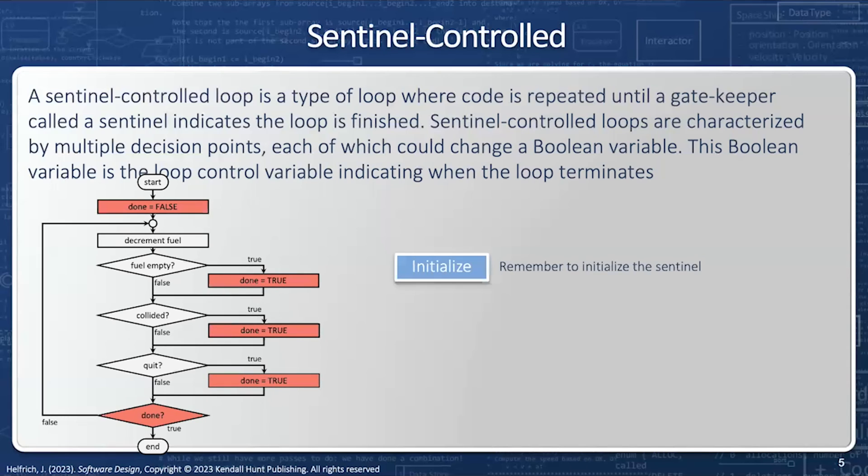Every time we have a sentinel control loop, we have these several parts. The initialization to set the sentinel. We have the control, which is the if statement or the while loop, to determine whether we're going to continue looping. And then we have the body, and the body's going to set the sentinel.